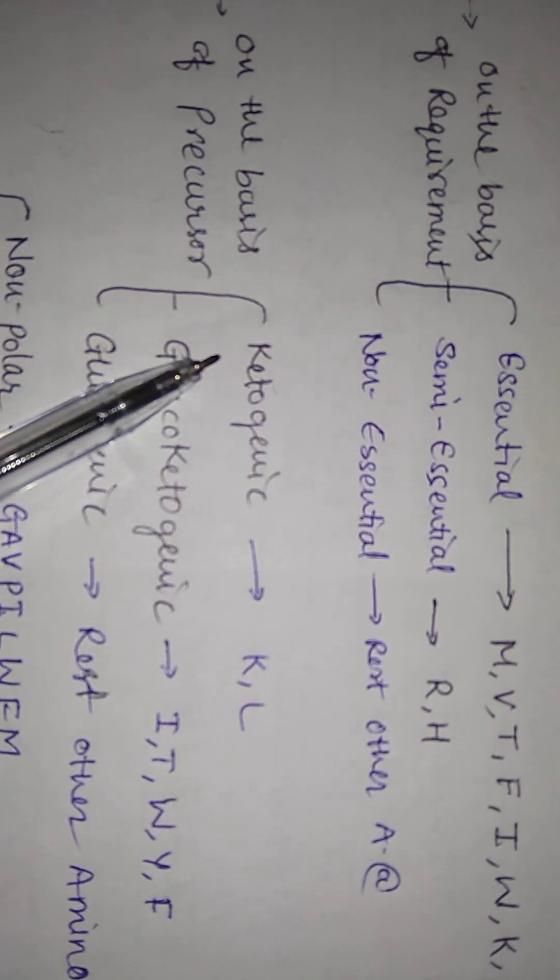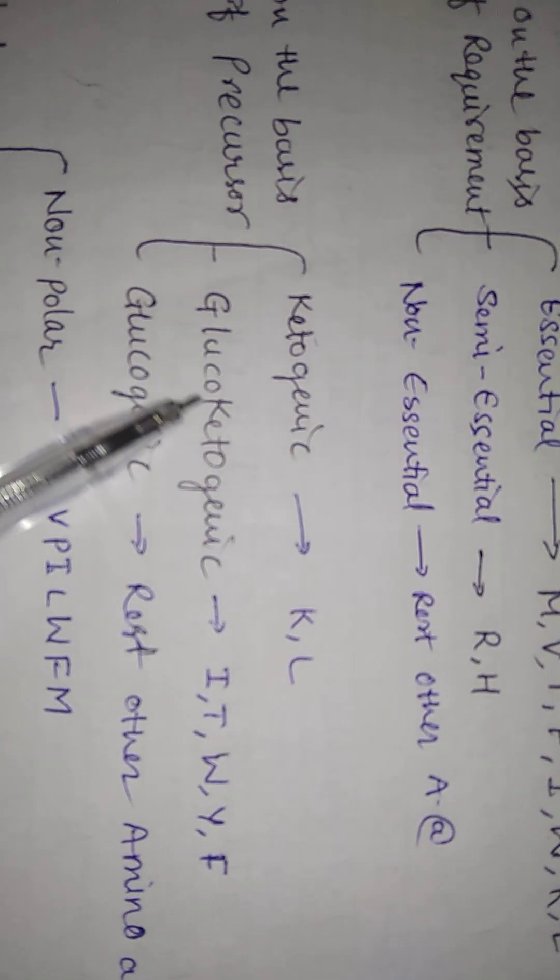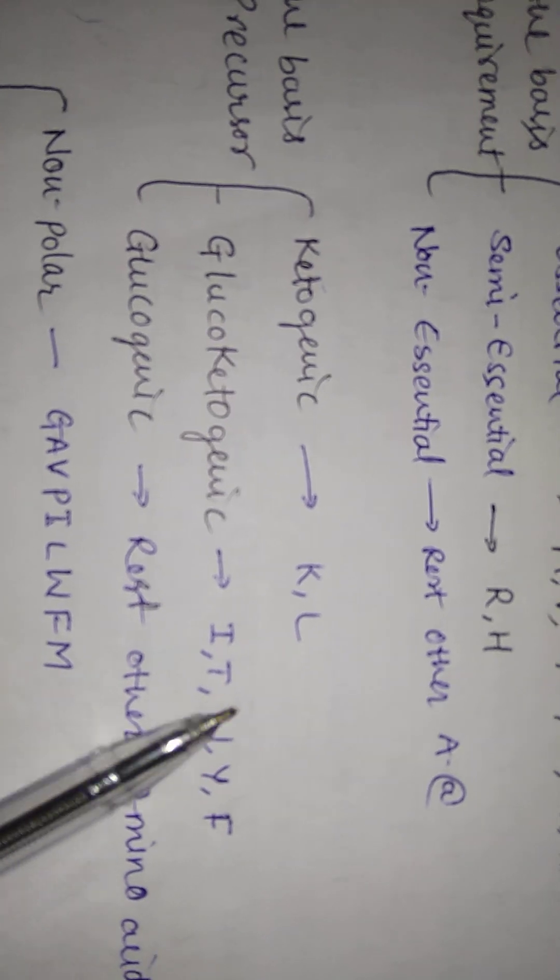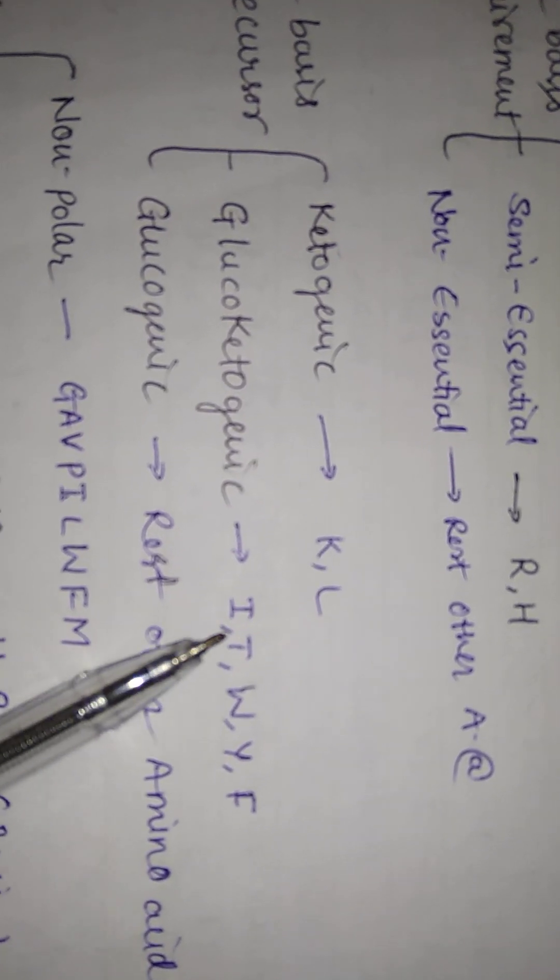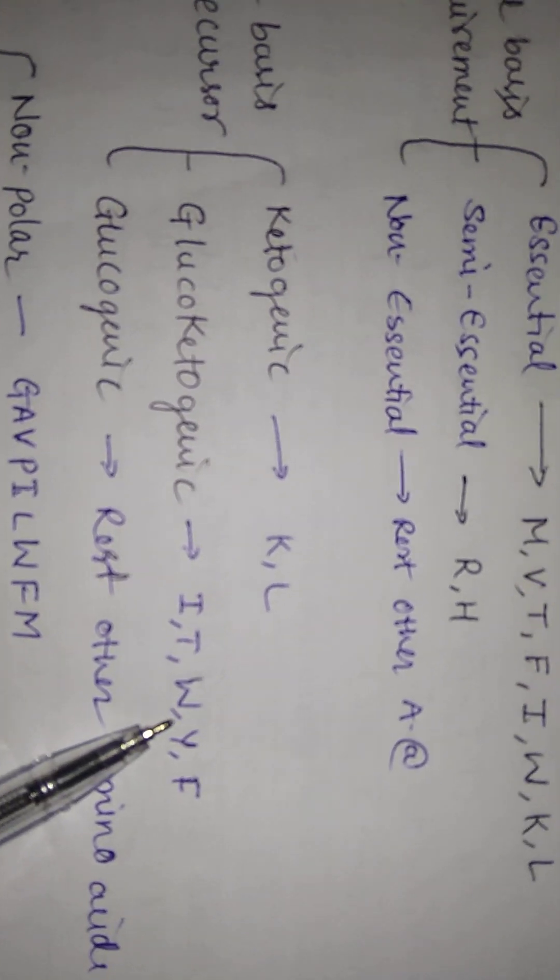Lysine and leucine. If it is glucoketogenic, we will call it glucoketogenic, which includes isoleucine, threonine, tryptophan.